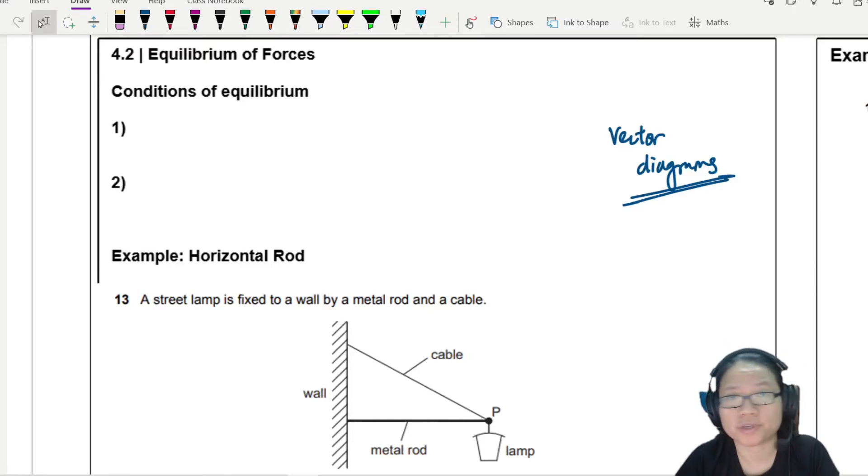So in the previous videos, recordings, and examples, you have understood that for a system to be in equilibrium, there are two conditions.